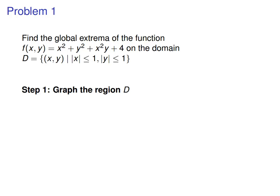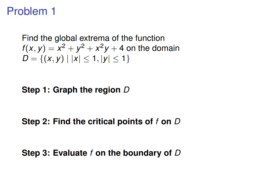First step, graph the region. Second step, find the critical points of the function on the region. Of course, you'll also evaluate the function on those points. And step three is to evaluate the function on the boundary of D. So the extreme value theorem is what gives us these final two steps.